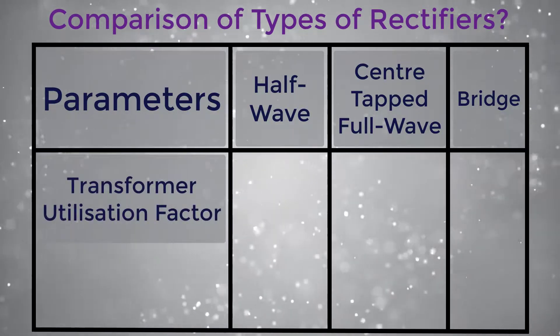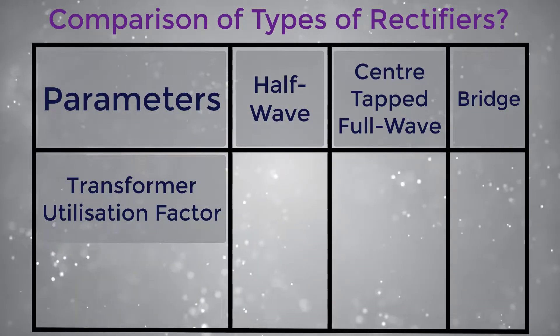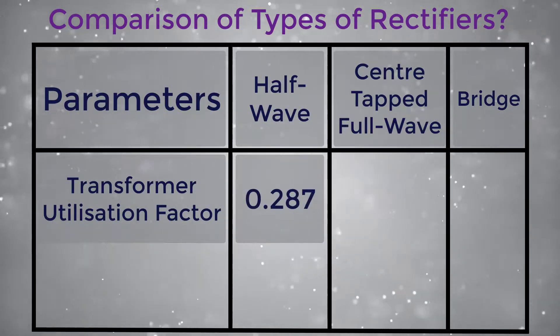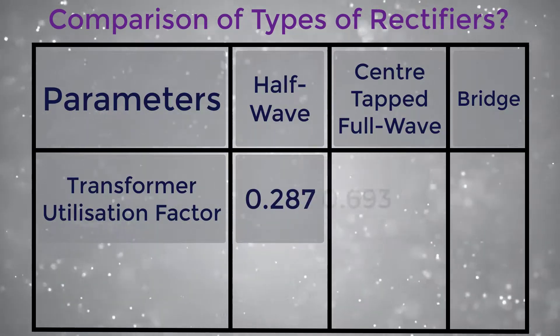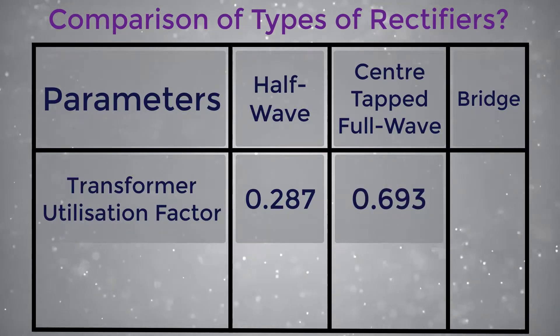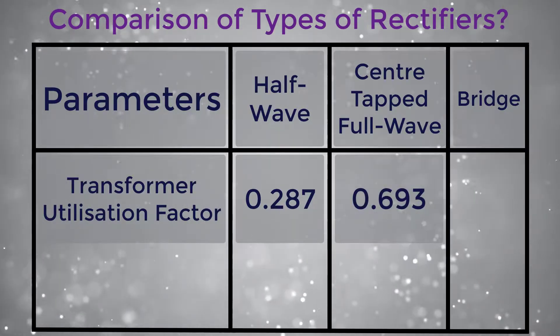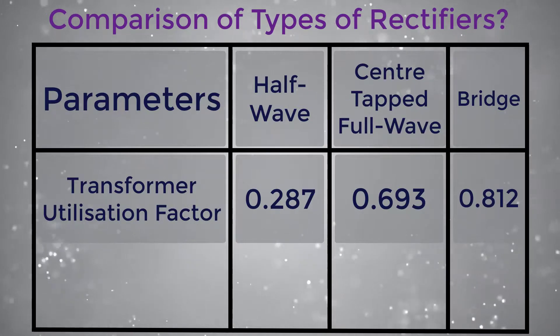Transformer utilization factor: for half wave it is 0.287, for center tapped full wave it is 0.693, and for bridge it is 0.812.